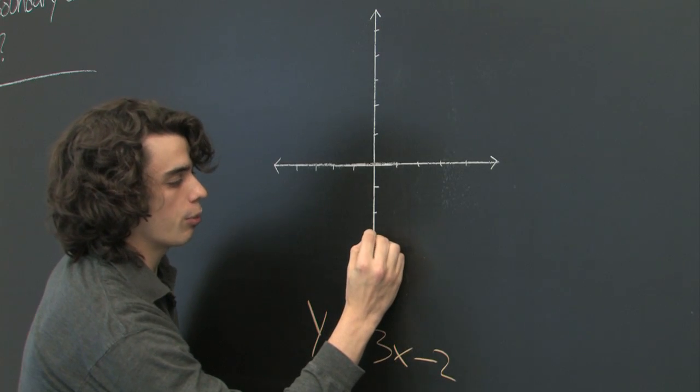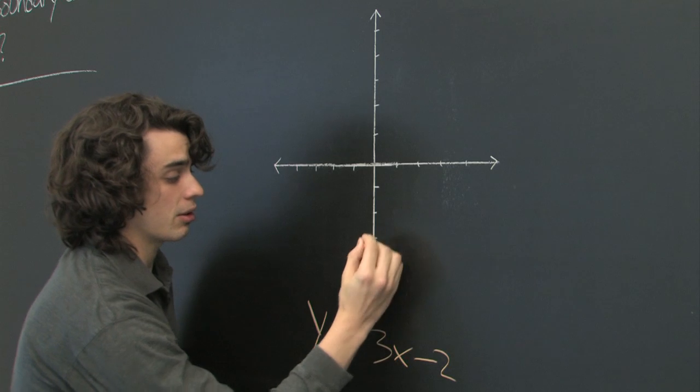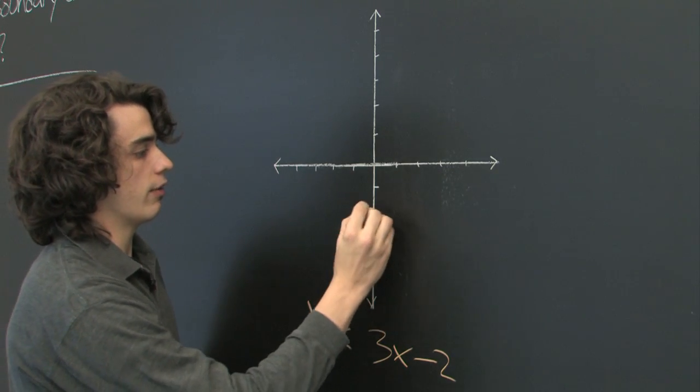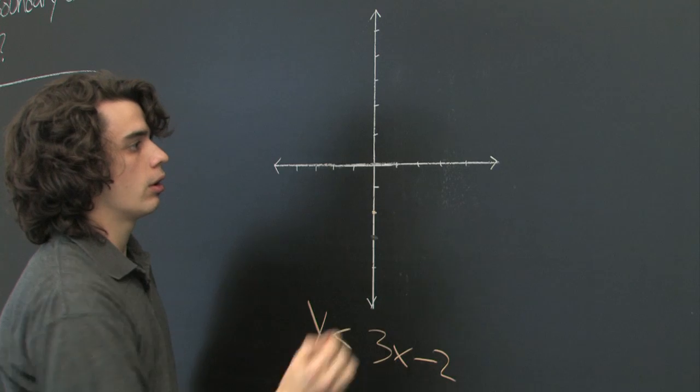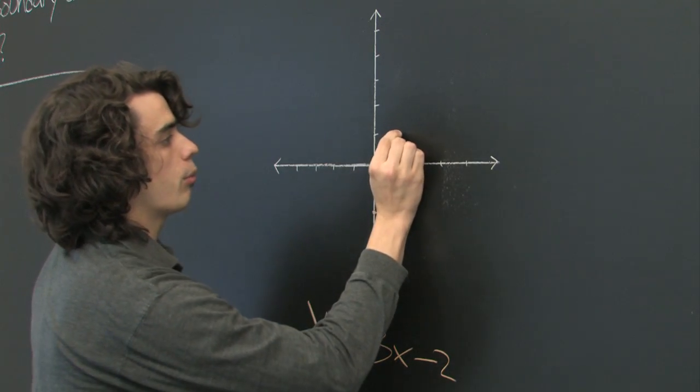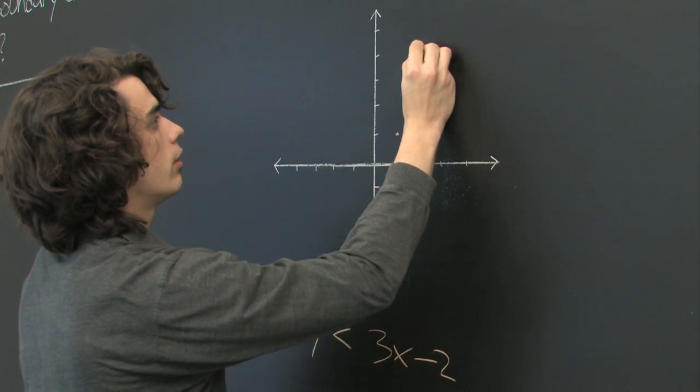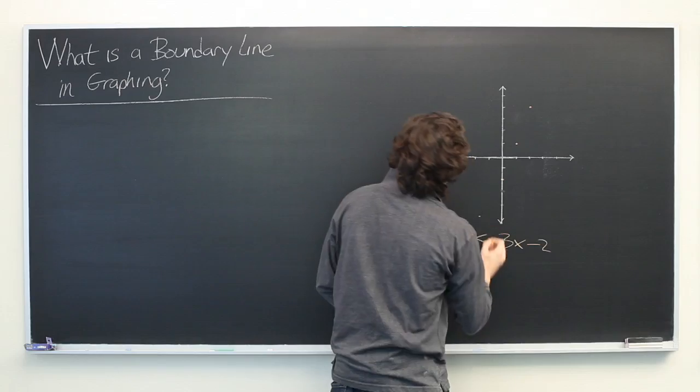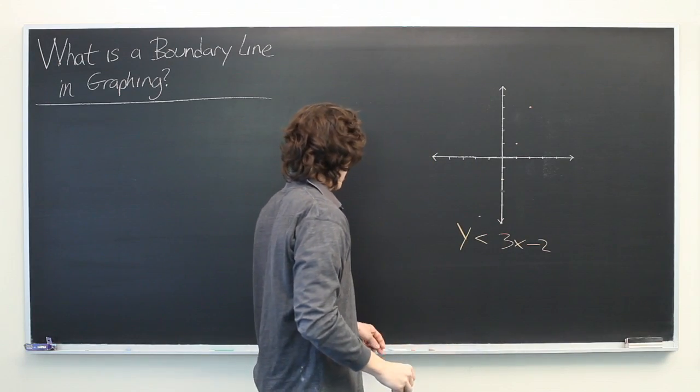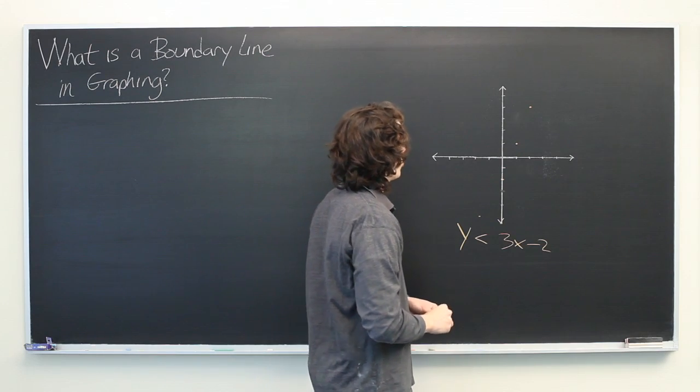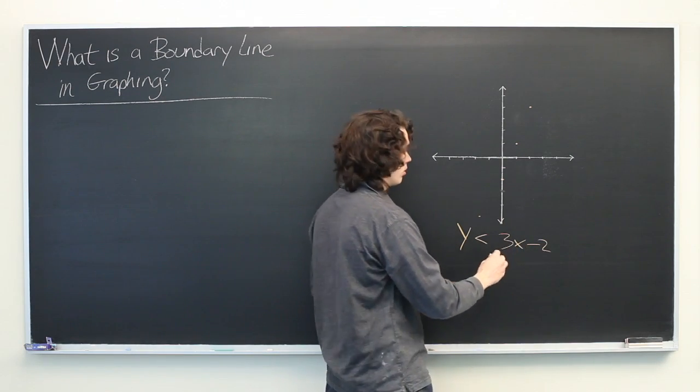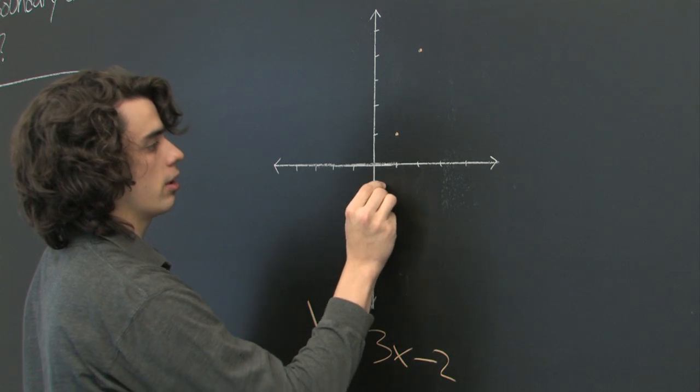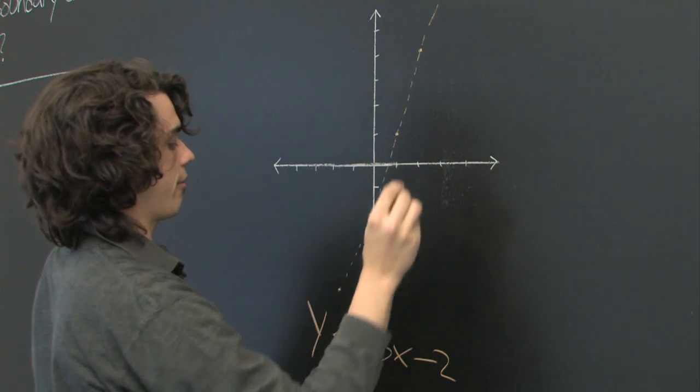So, we'll start by graphing a few points. If we plug in x equals 0, we get y equals negative 2. Graph a few more points here. Then from here, we graph the boundary line of this region with simply a dashed line connecting the points that we've already put on our graph.